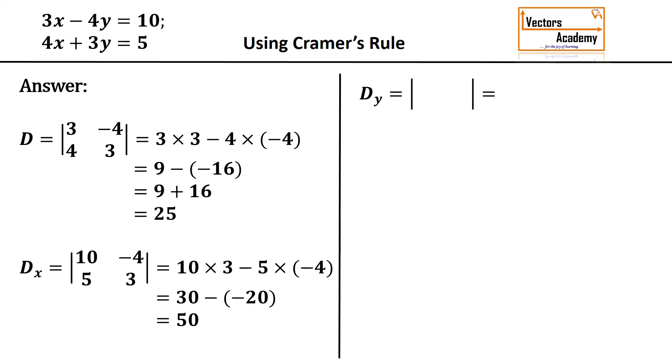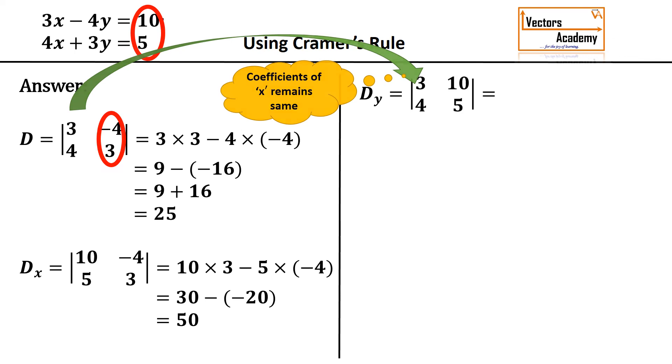Now the third determinant that is Dy. Now what is Dy? I need to replace the coefficients of y that is minus 4 and 3 with the constant coefficients that is 10 and 5. Hence I will get the value of Dy as minus 25.